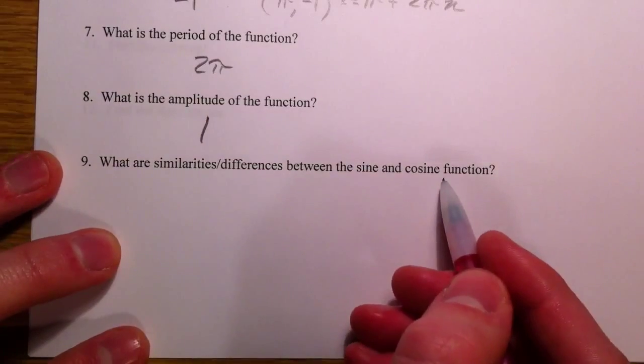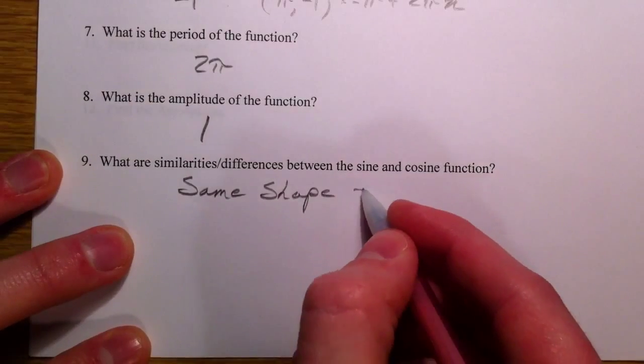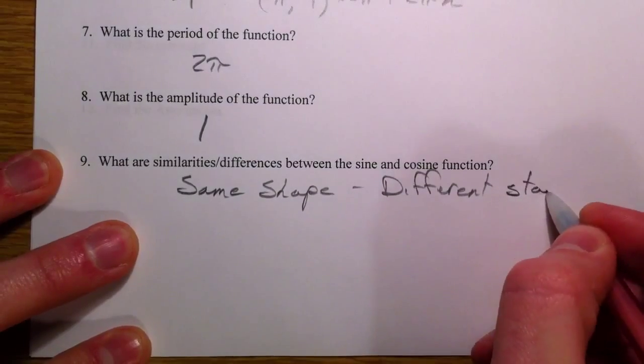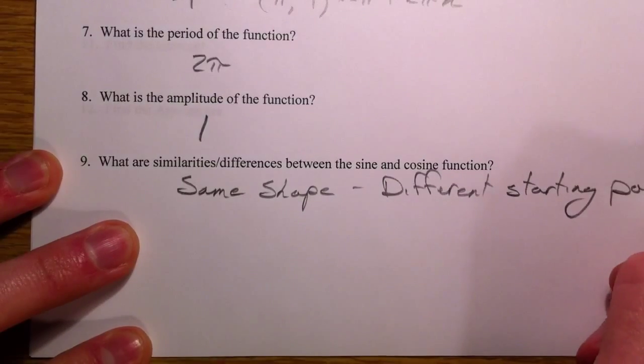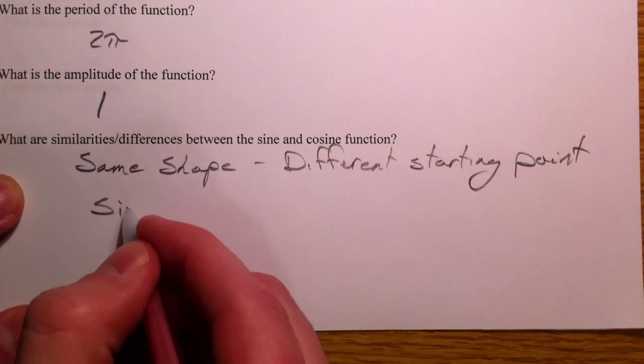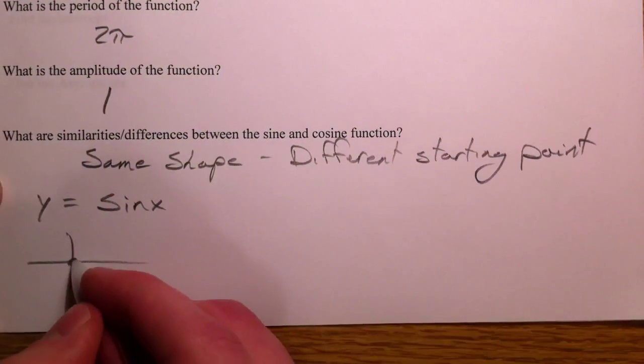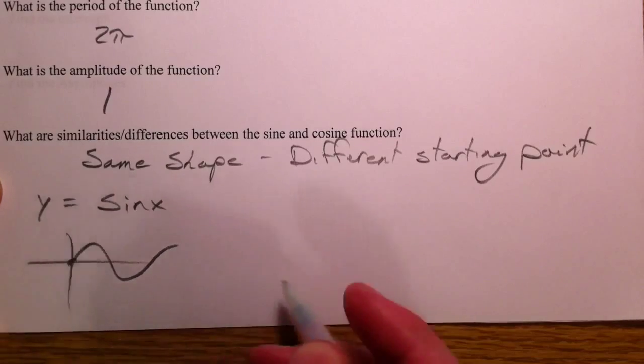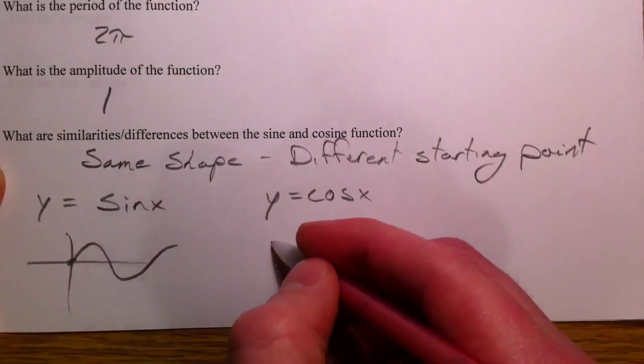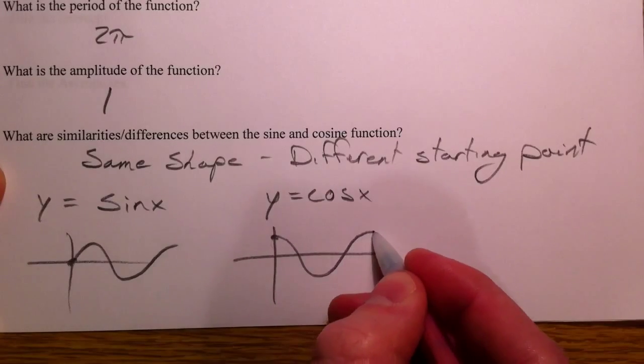Similarities and difference from the sine and cosine. Same shape. Different starting point. Had the same shape, so the sine function, y equals sine of x, we said started at 0 and then went up and started from there. Where the y equals the cosine function started at 1 and ended at the peak.